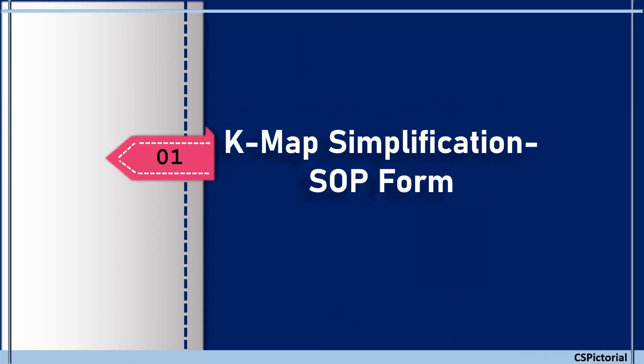Let's check out the k-map simplification procedure step by step if the given Boolean function is in sum of products form. Kindly check our previous video if you need a clear idea about the SOP and POS forms.